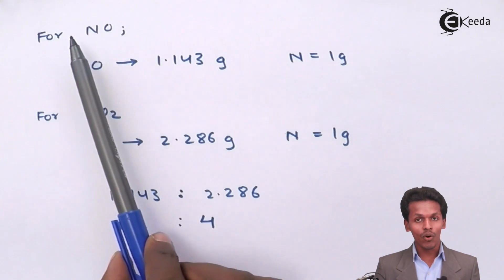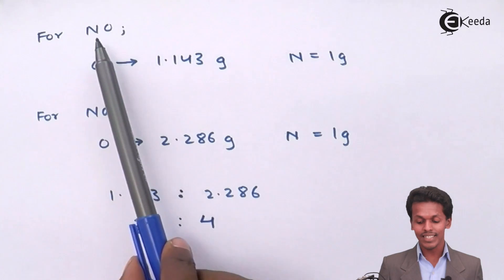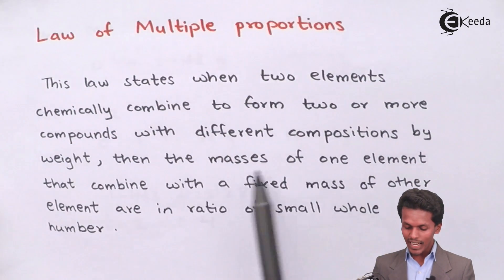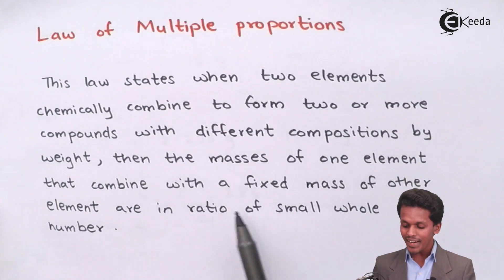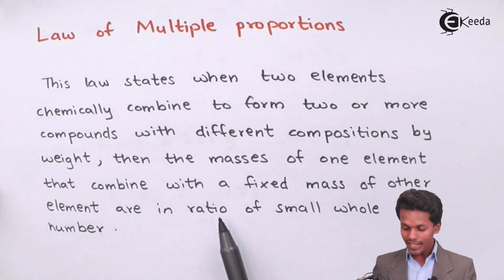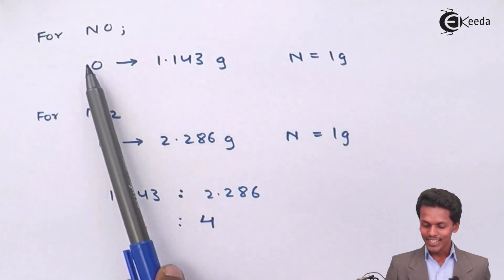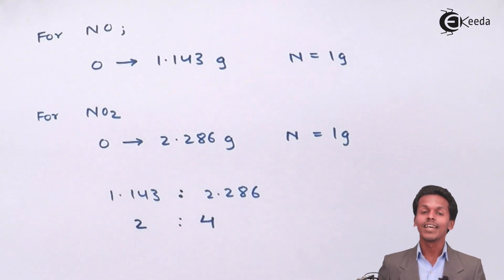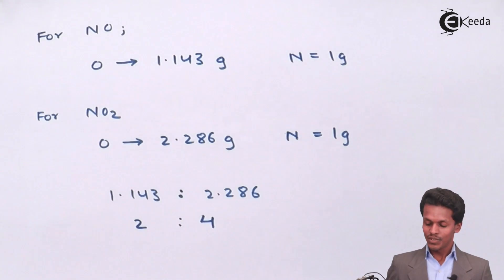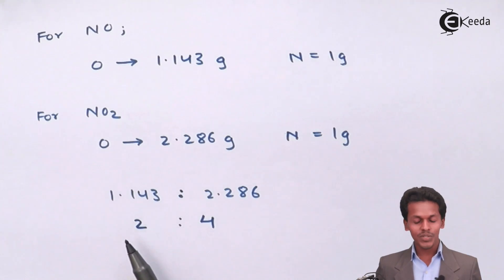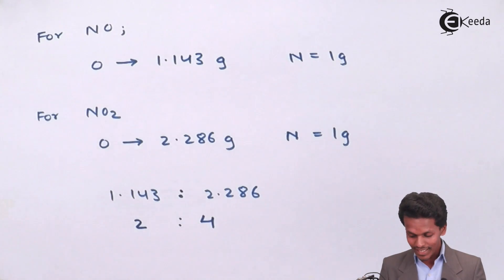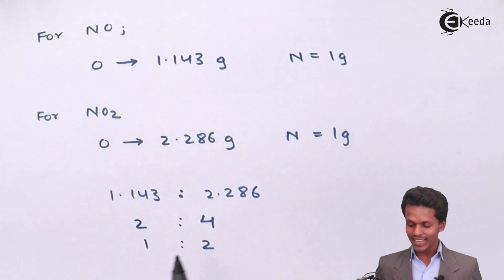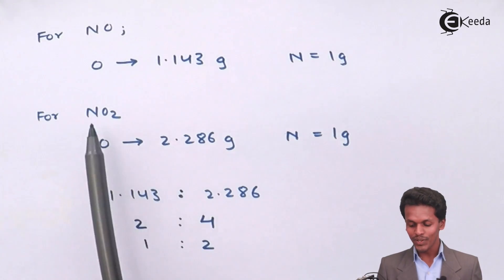Nitrogen combines with different amounts of oxygen: in NO it combines with one oxygen, and in NO2 it combines with two oxygens. So the masses of oxygen combining with a fixed mass of nitrogen are in a ratio of small whole numbers. The oxygen ratio works out to 2:4, which we can write simply as 1:2, confirming that nitrogen monoxide involves one oxygen while nitrogen dioxide involves two.